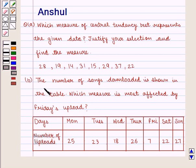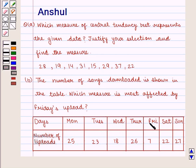Part B: the number of songs downloaded is shown in the table. Which measure is most affected by Friday's upload? The number of uploads: Monday 25, Tuesday 23, Wednesday 18, Thursday 26, Friday 7, Saturday 22, and Sunday 27.